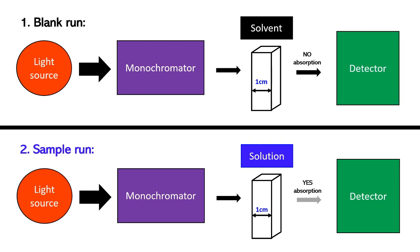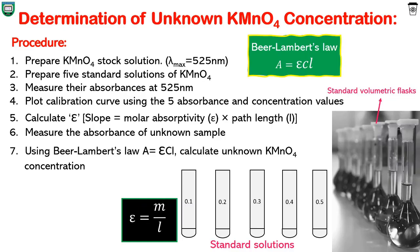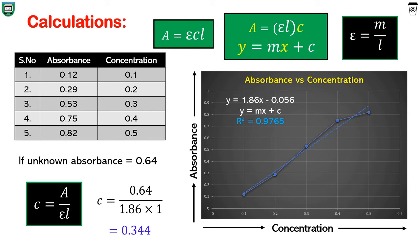Once we have the absorbance of all 5 standard solutions, plot the calibration curve. The absorbance values go onto the y-axis and concentration values onto the x-axis. Place the data in MS Excel and make a scatter plot as shown. I will make a video on how to make a scatter plot in MS Excel to get the y = mx + c equation and R² value. From this plot, note down the molar absorptivity from the slope, where slope M equals molar absorptivity ε multiplied by path length. Rearranging, epsilon equals slope divided by L. Now we have the epsilon value ready.